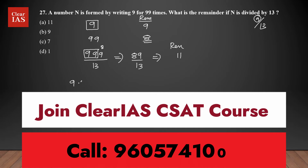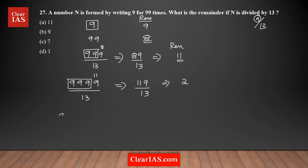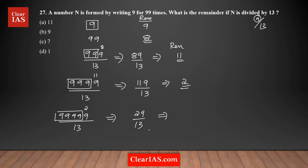For four 9s, I already know three 9s gives remainder 11, so I need to find the remainder when 119 is divided by 13. Since 13 × 9 = 117, the remainder is 2. For five 9s, remainder from four 9s is 2, so I check 29 ÷ 13: 26 is the closest multiple, so remainder is 3.